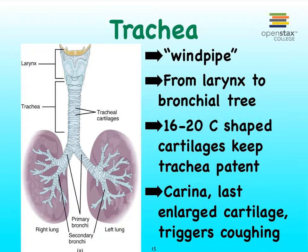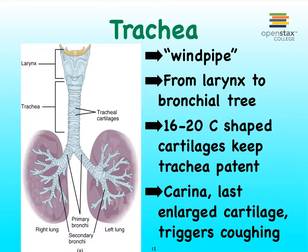Our trachea is characterized by a large amount of hyaline cartilage, and that hyaline cartilage is arranged in these C-shaped structures. They look like full rings, but they're actually C-shaped, as I'll show you in just a moment. The most inferior piece of cartilage, which is kind of V-shaped and somewhat enlarged, is very sensitive to all kinds of irritants and helps us with coughing.